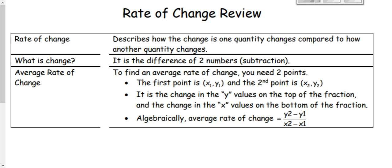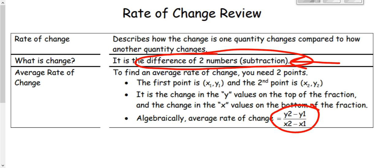In this lesson we are going to talk about a rate of change review. Rate of change is the change in one quantity compared to another quantity — that's like the change in rise versus the change in run, or the change in y versus the change in x. A key thing to remember is we're talking about a difference, which means we're going to be using subtraction. The formula is y2 minus y1 over x2 minus x1, but I like to simplify that to the change in y over the change in x. That little triangle means delta, which means change.